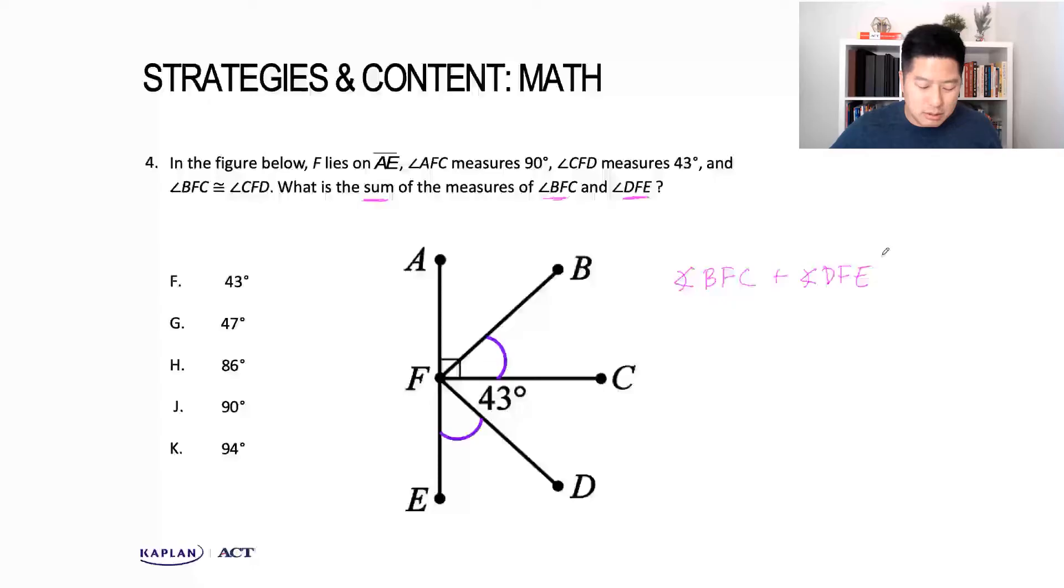Since we are solving for these two angles, look at the information provided and transfer it to see what will help us get to these angle measures. If you don't have a figure, always redraw it because having that visual representation will help you. We know that point F lies on line segment AE, which means if angle AFC is 90 degrees, then angle CFE must also be 90 degrees because two angles on a line segment are supplementary - they add up to 180 degrees. That means these two angles, angle DFE and the one we're looking for, are complementary. They add up to 90 degrees, which means this angle measure is 90 minus 43.